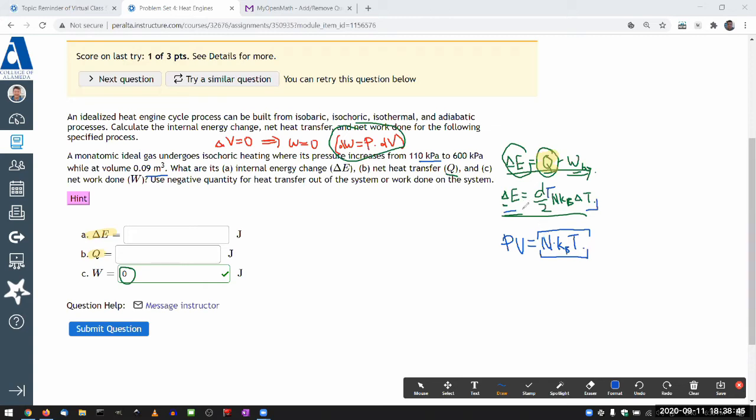You can kind of write this change in internal energy as D over two times change in pressure times volume using this ideal gas law here. And that's going to be the approach that I take.